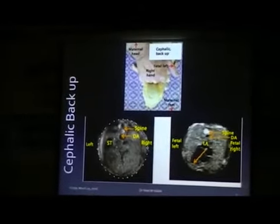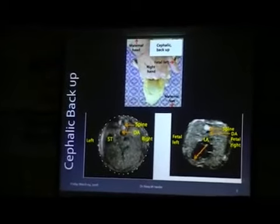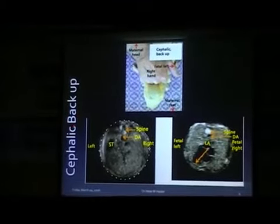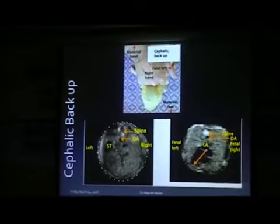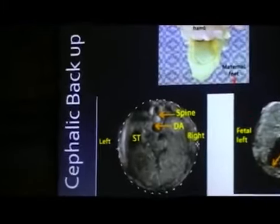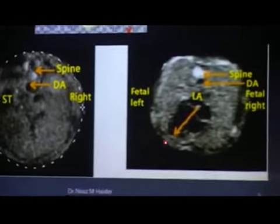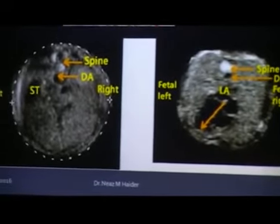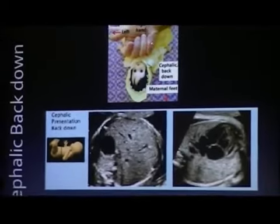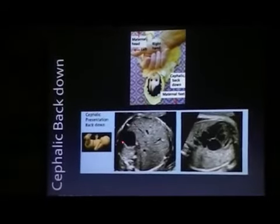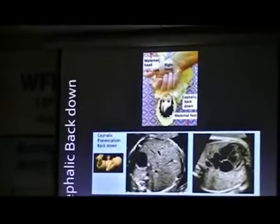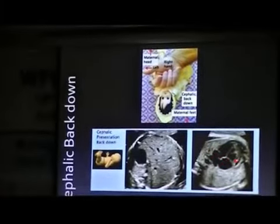The fetus may be in the cephalic, breech, supine, or prone position. If the fetus is in the cephalic position with the back towards the transducer, then we will find the stomach on the left side in this section. In the cephalic position with the abdomen anterior, we will get the stomach with the indicator on the left side. As we proceed towards the fetal head, we will get the fetal heart in this position.